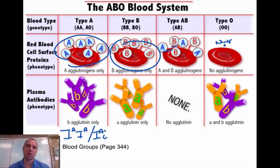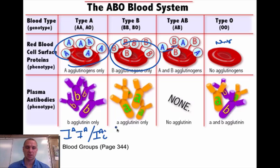Once they figured out what you were, they would give you the appropriate blood type. B blood has B antigens. Homozygous B blood would be capital I-B, capital I-B; heterozygous would be capital I-B, little i.